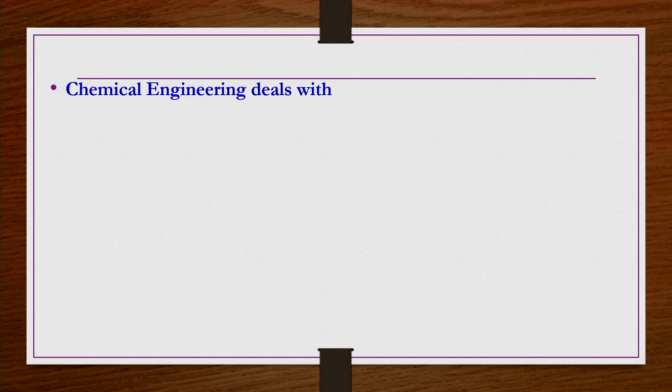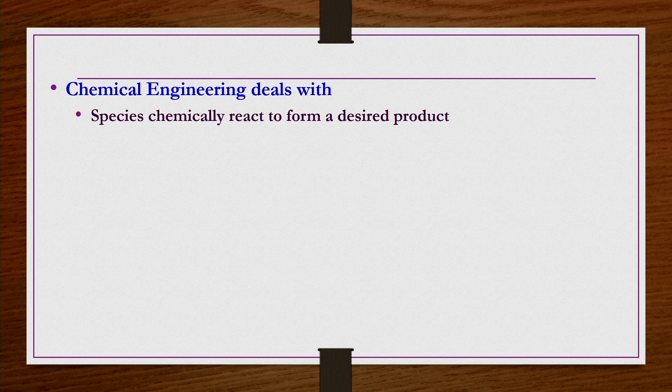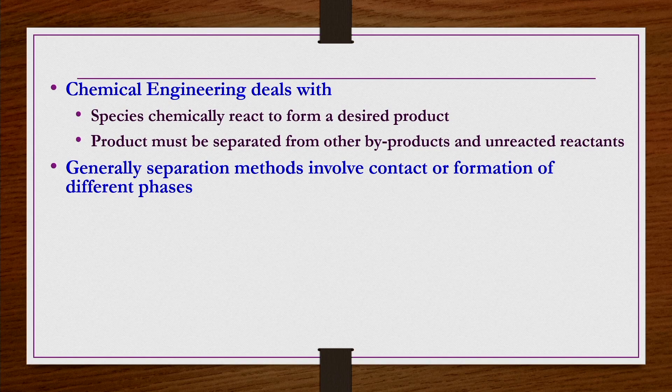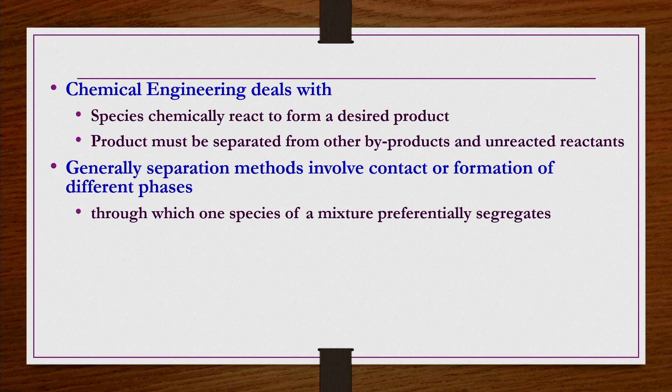Why should we study phase equilibrium problems, especially as chemical engineering students? In general, chemical engineering deals with species that chemically react to form a desired product, followed by separation of the product from byproducts and unreacted reactants. There is a tremendous amount of processes involving separation, and separation methods generally involve contact or formation of different phases through which one species of a mixture preferentially segregates.